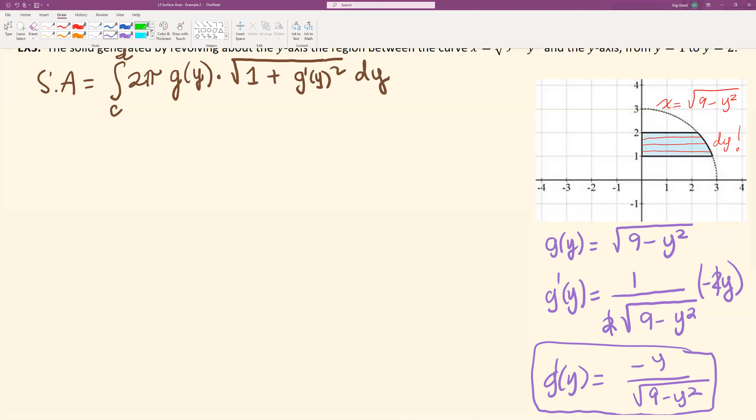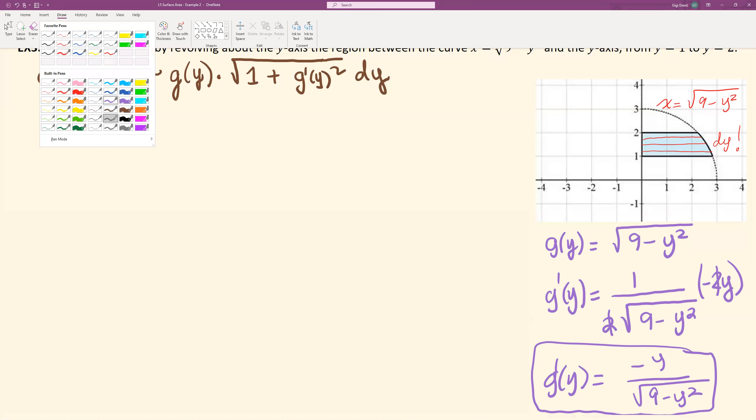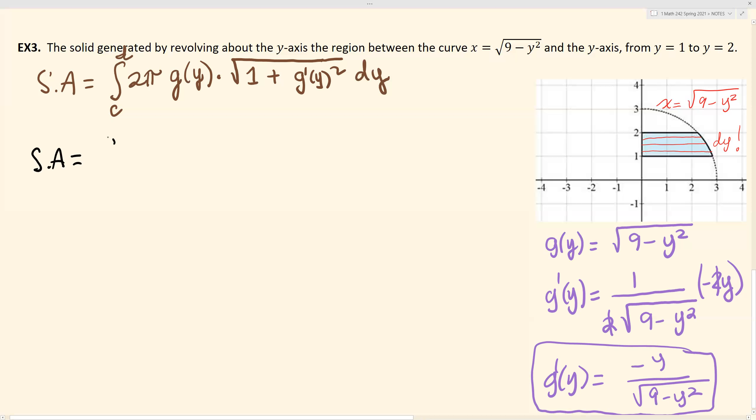So let's go back to our problem and plug in the information that we know. Surface area is going to equal the integral from 1 to 2 of 2π multiplied by the function value, which in this case is square root of 9 minus y squared, multiplied by square root of 1 plus the derivative squared. So that would give me y squared (negative negative y squared, that would just be y squared, right?) over 9 minus y squared. And then we are integrating that with respect to y.